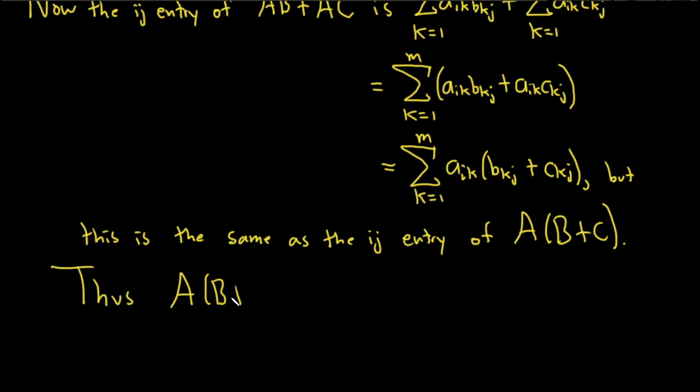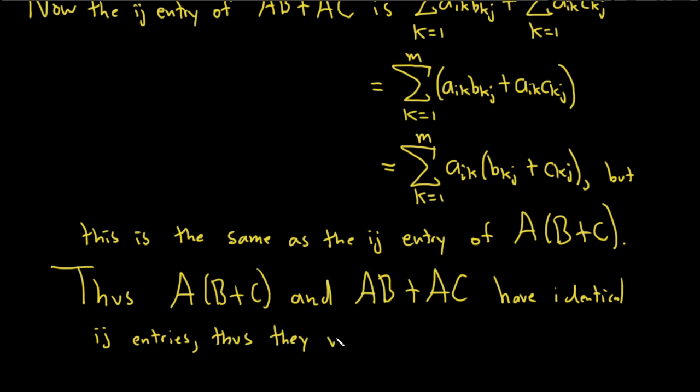A times (B + C) and AB plus AC have identical ij entries. Thus, they must be equal. And that completes the proof.